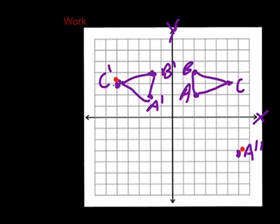We are going to do the same thing for the rest of them. Starting from B, go 1, 2, 3, 4, 5 down, and 8 to the right: 1, 2, 3, 4, 5, 6, 7, 8. Mark that and draw it in as B2. We are going to do the same thing for C — go 1, 2, 3, 4, 5 down, and then 8 to the right: 1, 2, 3, 4, 5, 6, 7, 8. Mark that and draw it in as C2.